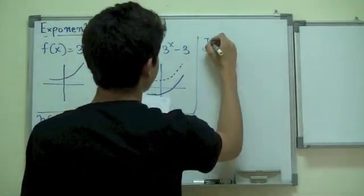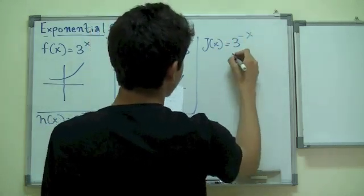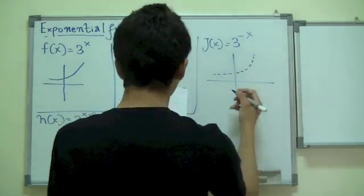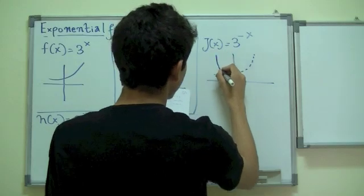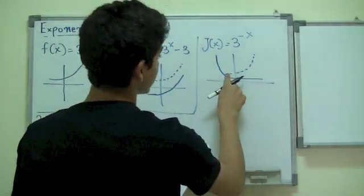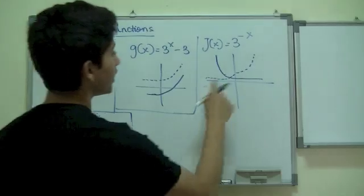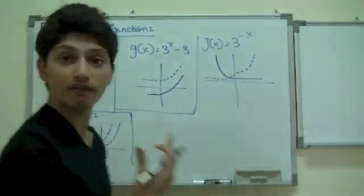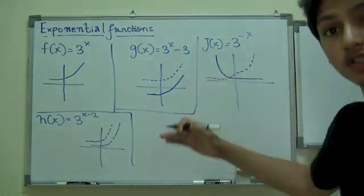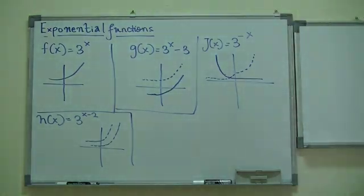Now, the last one, g(x), 3 raised to negative x. This would be, the first graph was right here, right? We all agree. The second graph would be right here. The reflection of this graph. This is not drawn properly, but there is a reflection when you graph it. When you actually plot those correct number of points, you can actually see that they are being reflected off of y axis, across the y axis.